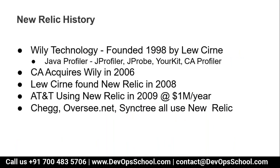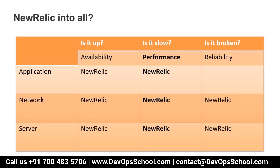The history of New Relic: one guy named Lew Cirne founded Wily Technology in 1998. As part of Wily Technology, many software products were developed for performance management such as Java profilers, CA profilers. CA (another company) acquired Wily Technology in 2006. After that, Lew Cirne founded New Relic in 2008. AT&T is the largest account using New Relic, at over one million dollars per year as of 2019. New Relic today is into everything.